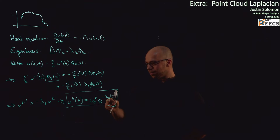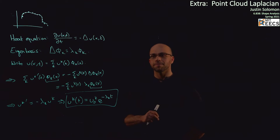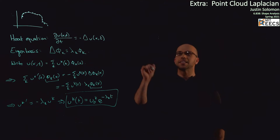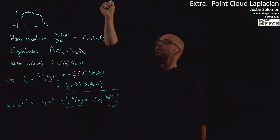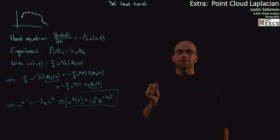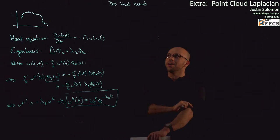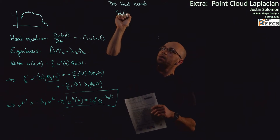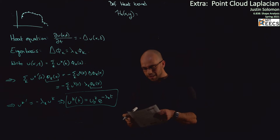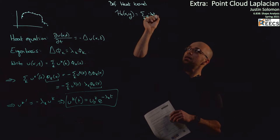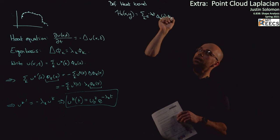If I differentiate that solution with respect to t, the coefficient remains the same and I get a minus λ_k factor coming out, which is exactly what we'd expect. That motivates defining the heat kernel. The heat kernel h_t is a function of two points on our manifold, and it can be written as the sum over k of e to the minus λ_k t times φ_k(x) times φ_k(y).